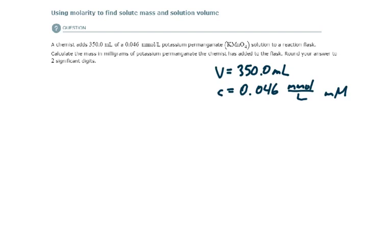And they want us to find the amount of solute in 350 milliliters of a 0.046 millimolar solution of potassium permanganate. So they want us to find this amount of solute in however many milligrams of potassium permanganate it would be.